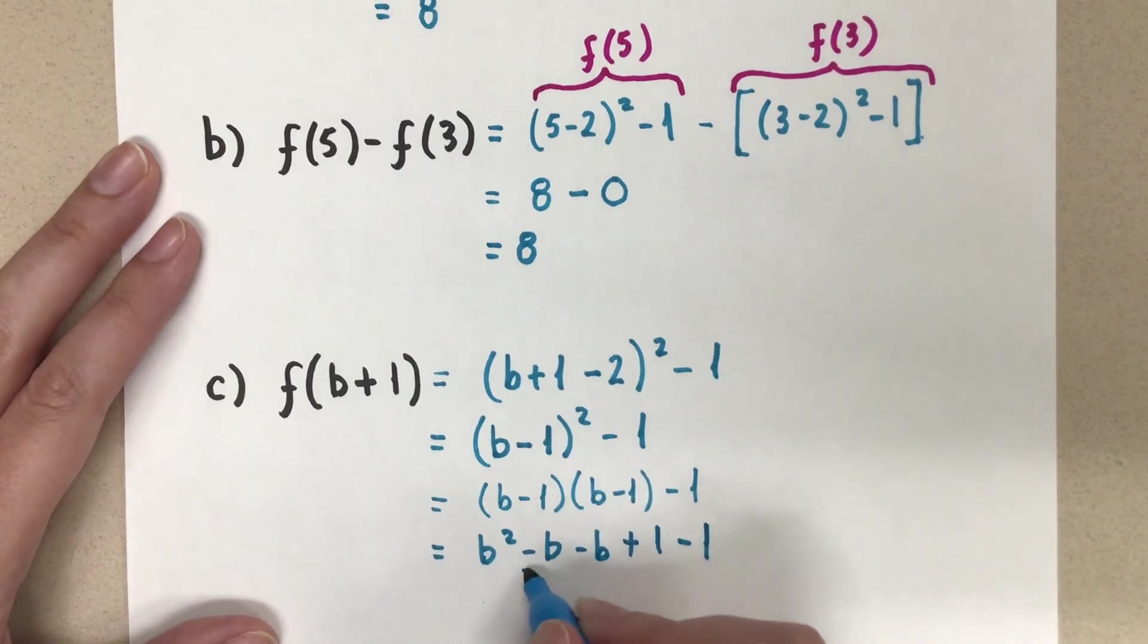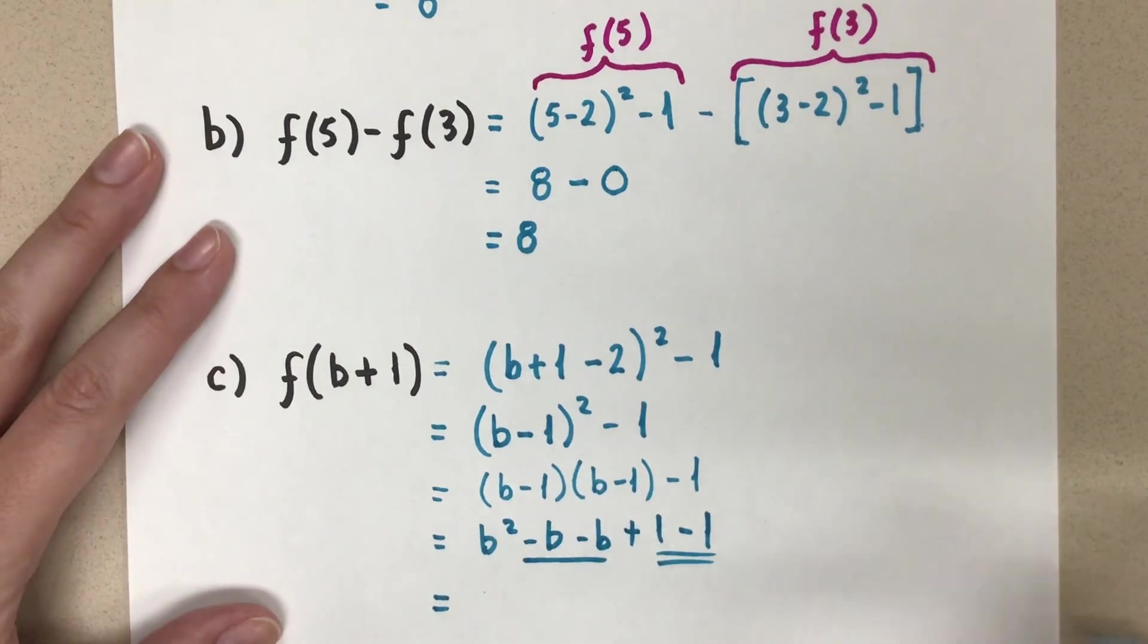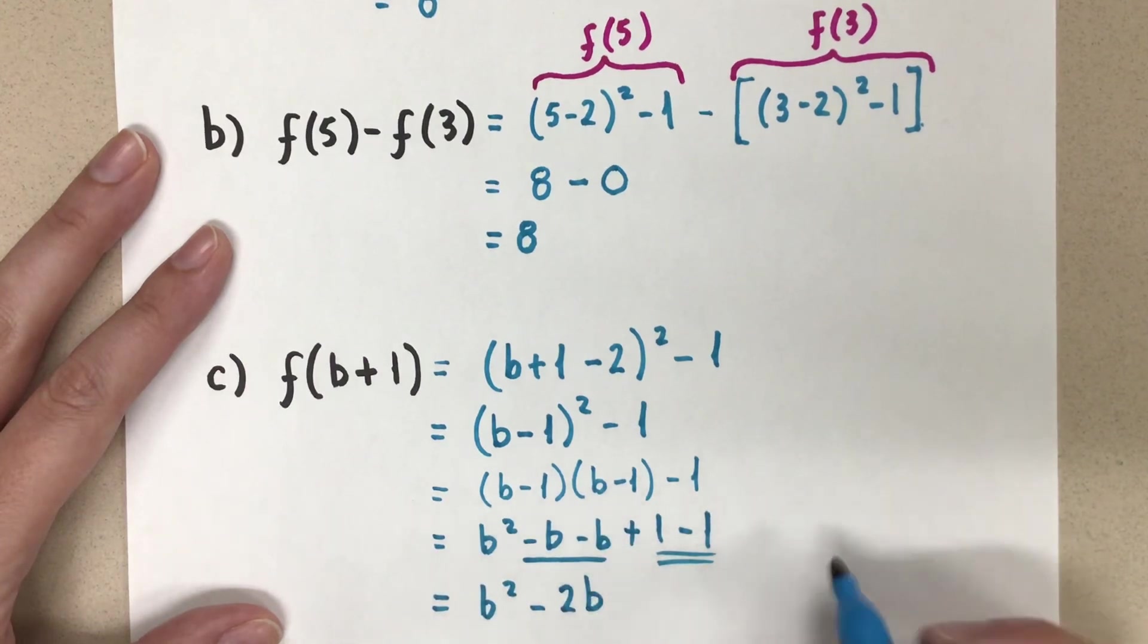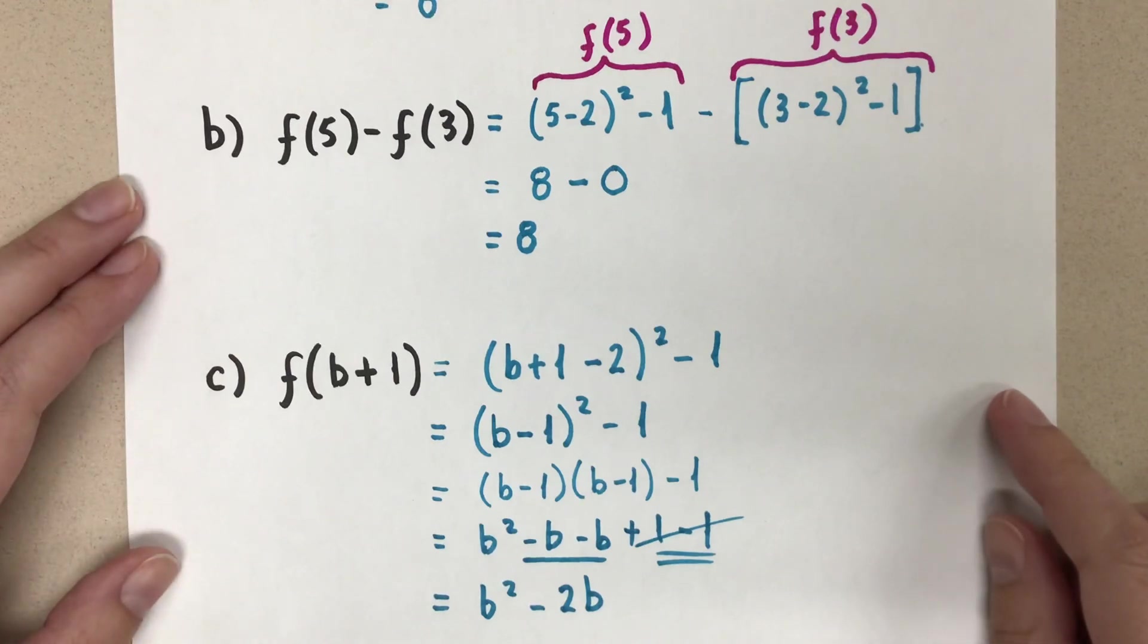So we want to now combine our like terms, those b's and these constants. And our final answer here is going to be b squared minus 2b. And then 1 minus 1, that's 0. So the b squared minus 2b is our final simplified answer here. We leave it just like that. There's nothing more we can do.